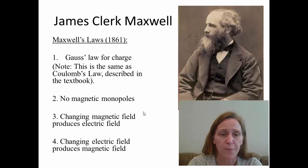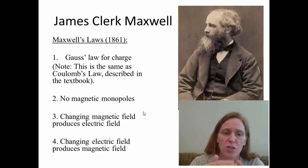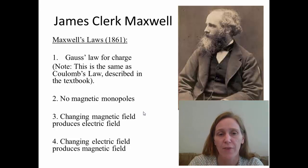The fourth of these is that there's a changing electric field, a changing electric field produces a magnetic field. This is what both Oersted and Ampere had found when they were able to get magnetic fields by putting a current through a wire.